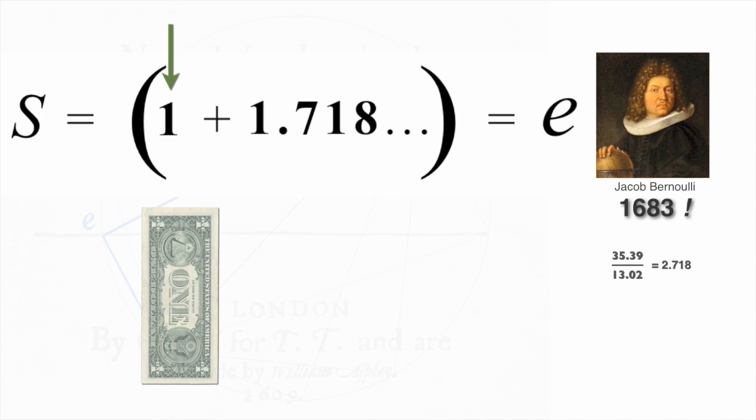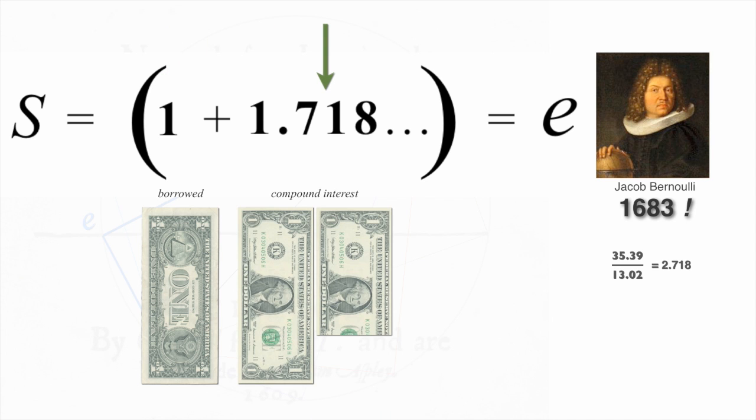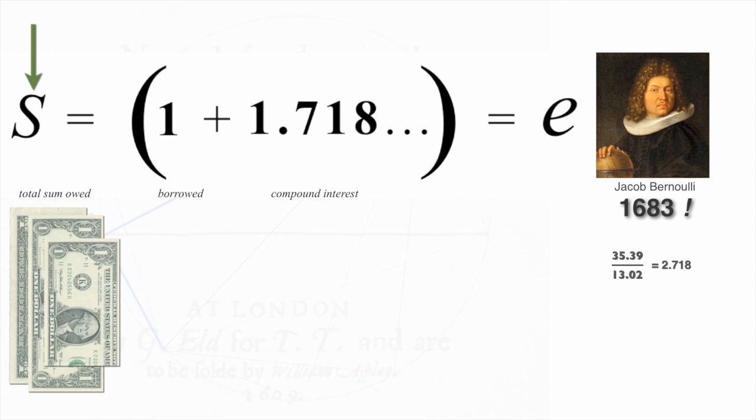Essentially, it's this. One is the amount that we borrowed, plus 1.718 is the maximum possible compound interest if it's calculated continuously. The total is E, or $2.718, which we owe the bank.